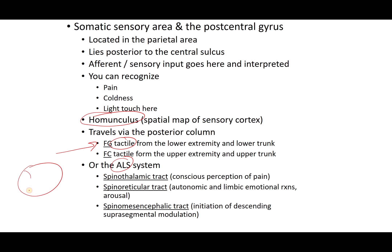We also have the anterior lateral system. Looking at a cross-section of the spinal cord with the gray matter, the anterior lateral position puts it at the anterior and lateral aspect of the cord. The anterior lateral system is the spinothalamic tract, responsible for conscious perception of pain, and the spinal reticular tract — we'll dive deeper into these later.